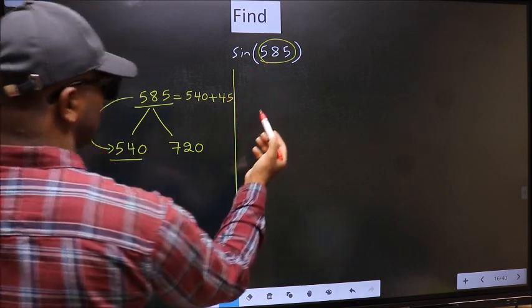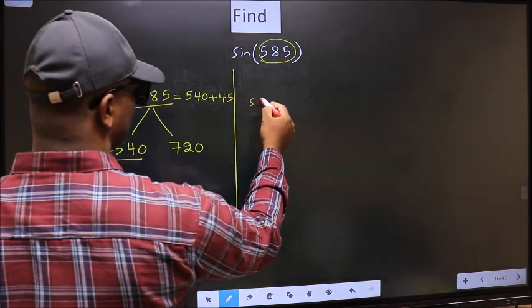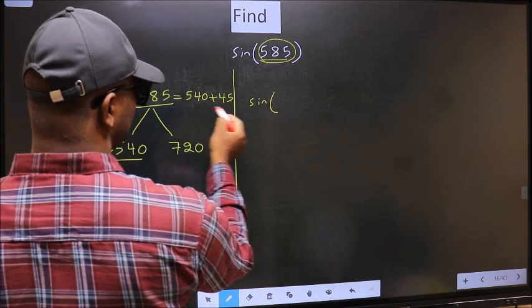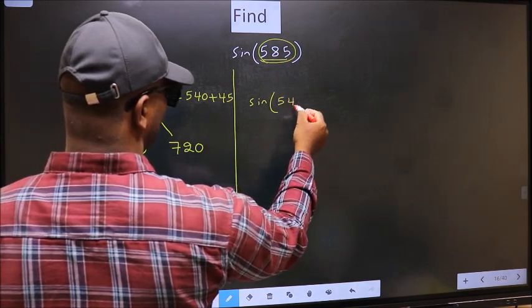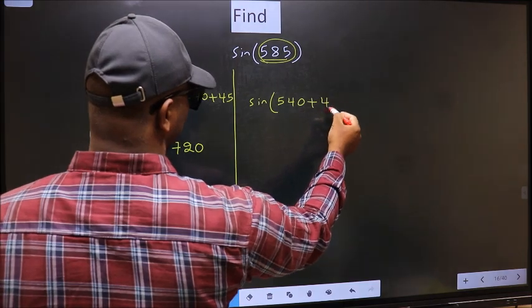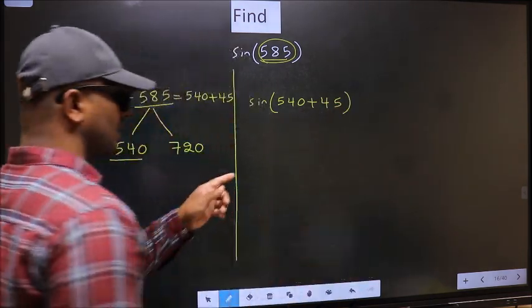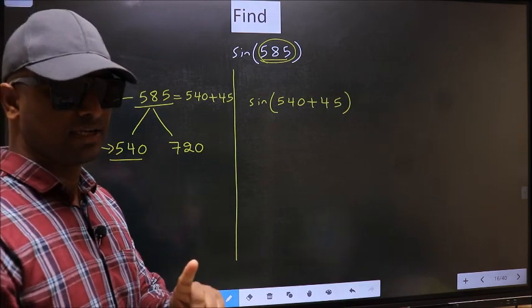So, this will become sin, and in place of 585, now we should write 540 plus 45. This is your step 1.